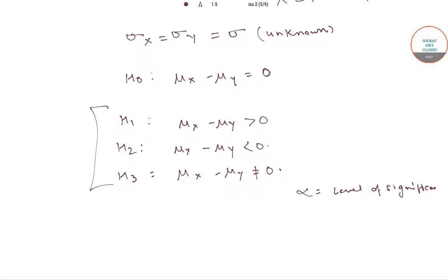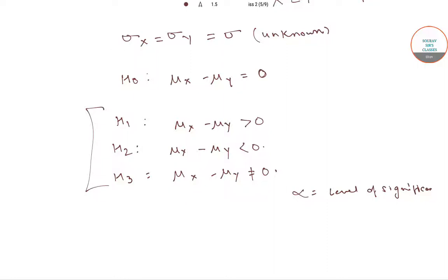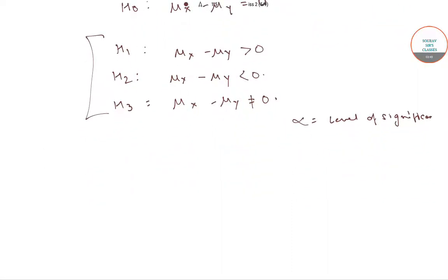हमारी level of significance आ गई। अब हमें पता है कि σx और σy दोनों equals to σ हैं, लेकिन यह unknown है, यानि कि जो हमारी population variance है वो unknown है, but both the populations have same variance, that is they are homoscedastic. तो यह दोनों populations homoscedastic हैं लेकिन उनकी population variance unknown है, यानि σx² = σy² = σ². तो यहाँ पर हम सबसे पहले estimate करेंगे σ² by pooled estimator.